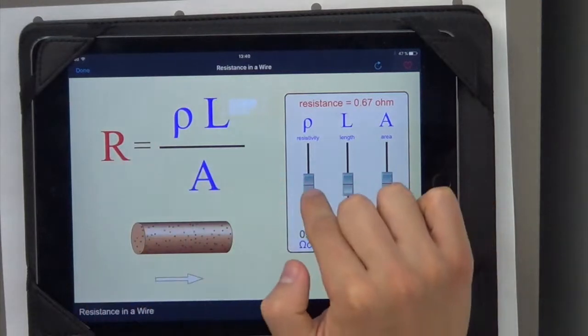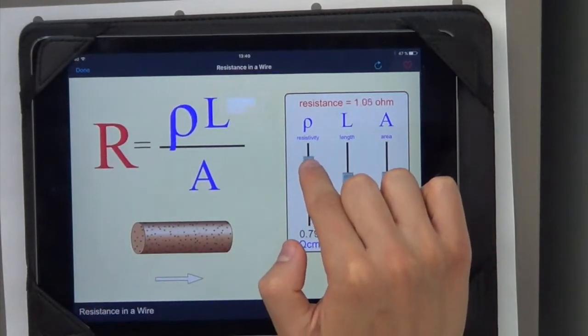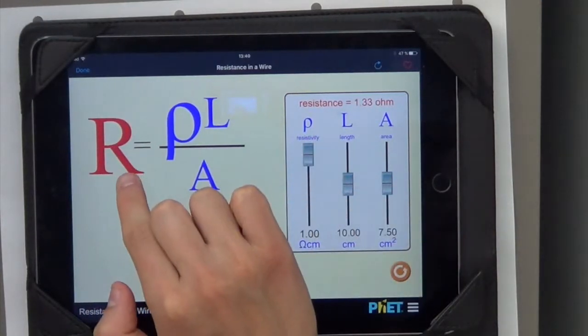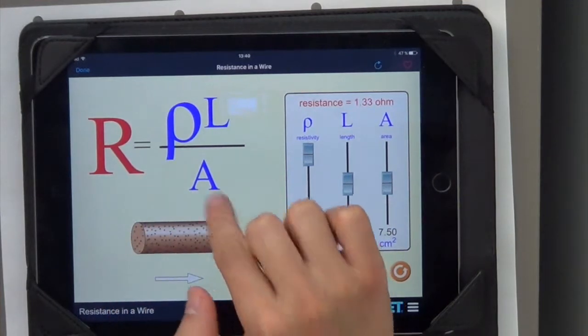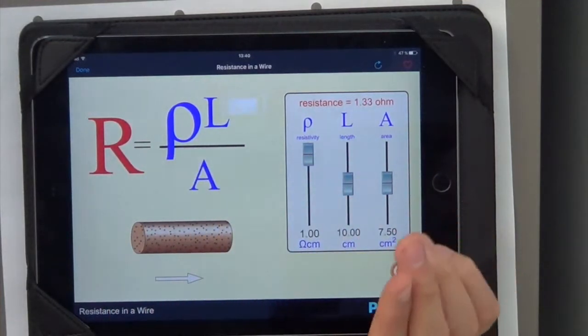Notice what happens when I change the resistivity. Notice the R becomes larger, meaning the resistance increases.